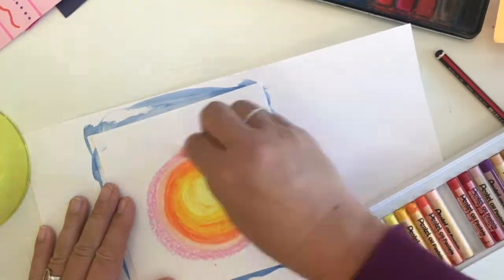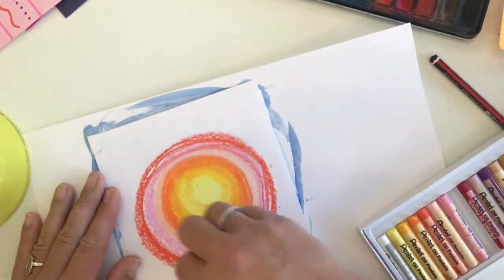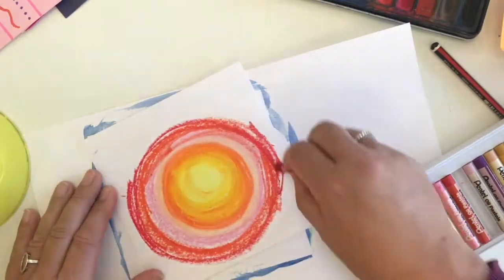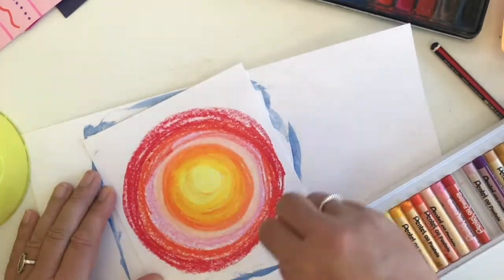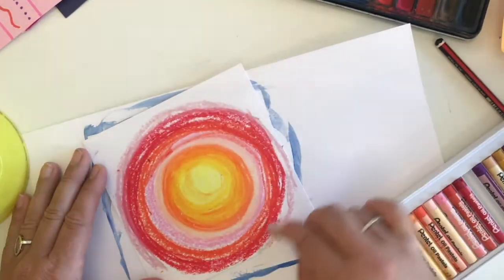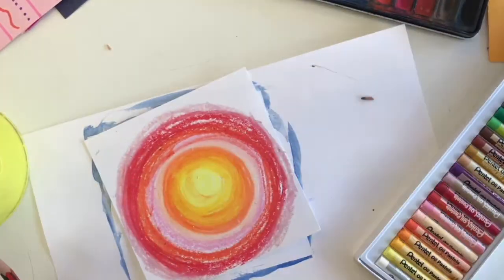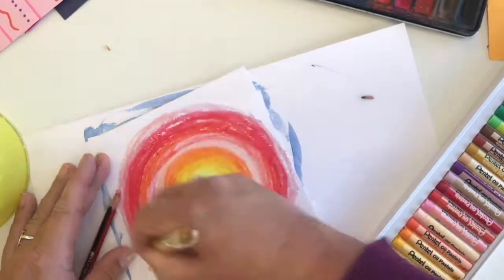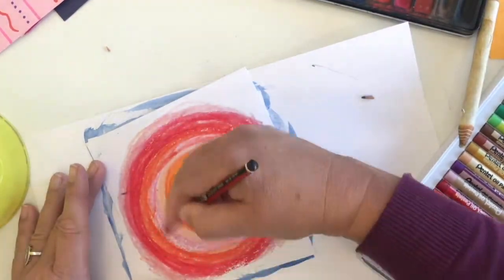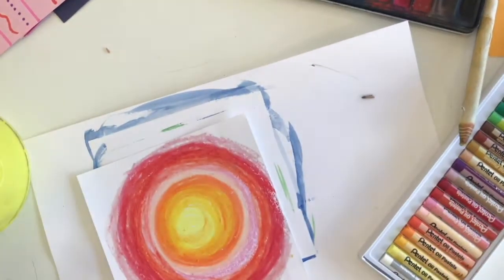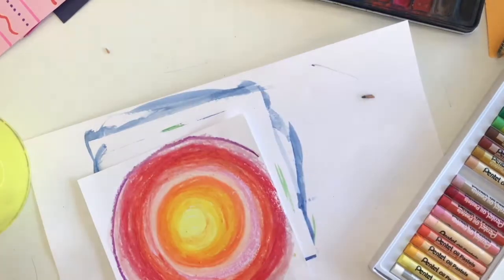Now most people wouldn't have a smudging stick in their house, so I'm going to show you a trick to make your own. Take a normal pencil and you can just snap off the end of your pencil, which sounds like a terrible thing to do, but then you can use the wooden bit of the pencil for smudging your oil pastel so there are no white patches and making it look a bit more fluid.